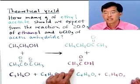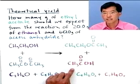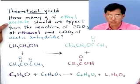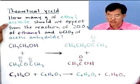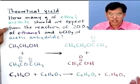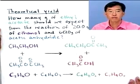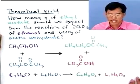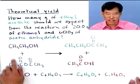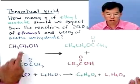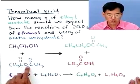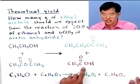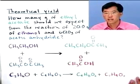And acetic acid is the acid in vinegar. Here's the problem: how many grams of ethyl acetate should we expect from the reaction of 20 grams of ethanol and 60 grams of acetic anhydride? This is a balanced reaction — one mole of ethanol plus one mole of acetic anhydride forms one mole of ethyl acetate and one mole of acetic acid.